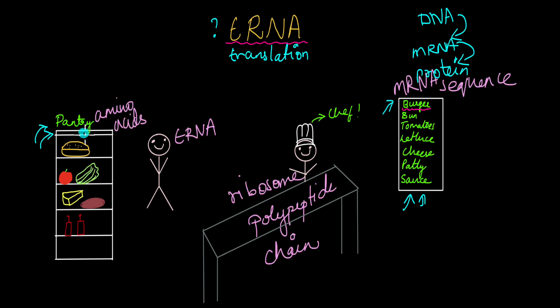So in this case the assistant is the tRNA. The chef and the kitchen island is the ribosome and the burger recipe is actually the mRNA sequence. The chef cannot physically move from that place to read the recipe card and get the items from the pantry but the assistant can.